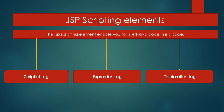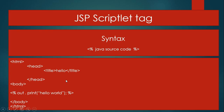Hello friends, in this video tutorial we discuss about the JSP scripting elements. The JSP scripting elements enable you to insert Java code in JSP pages. There are three types of scripting elements: first is the scriptlet tag, second is the expression tag, and third is the declaration tag. We discuss one by one.